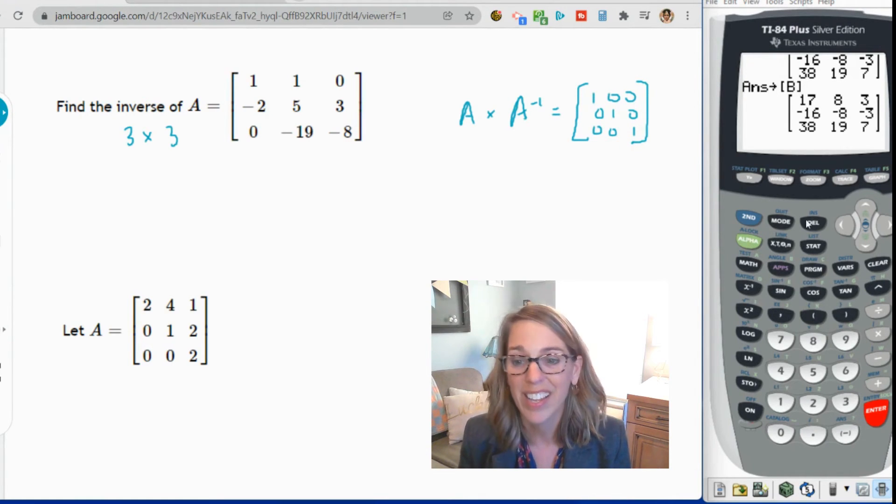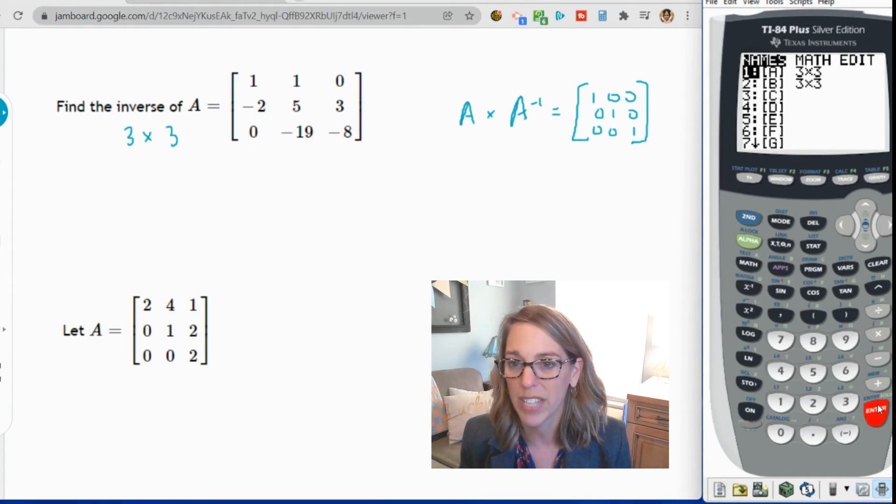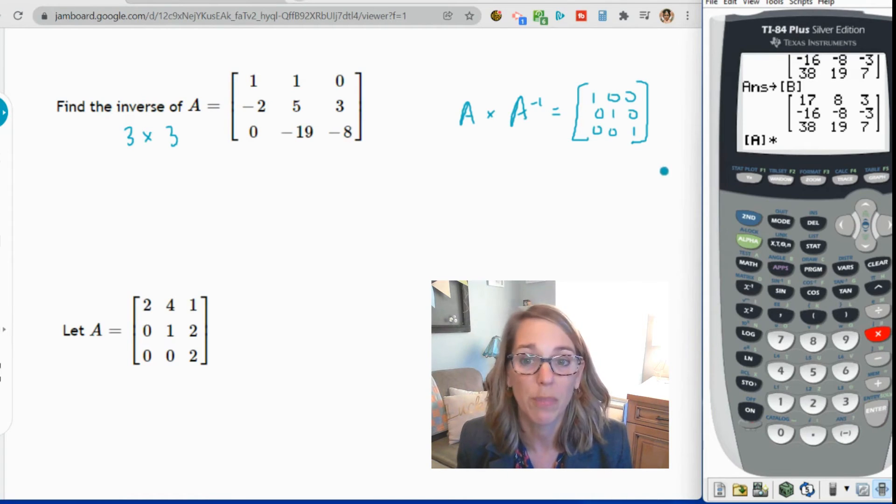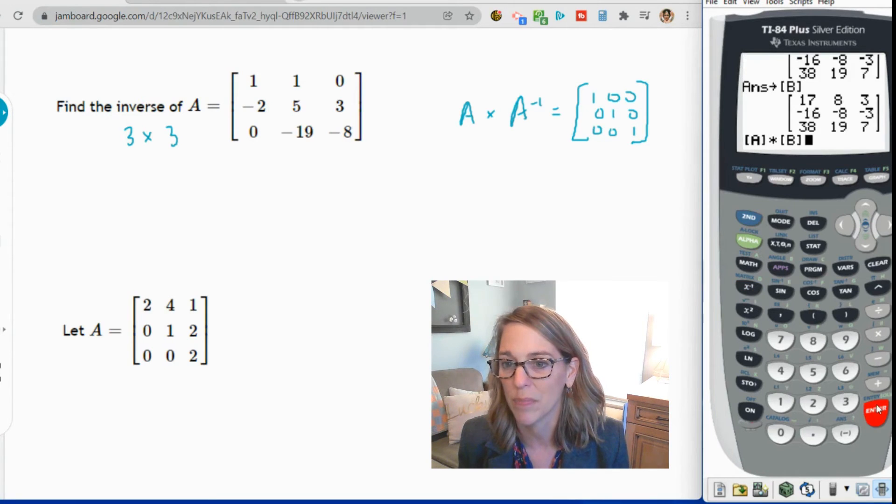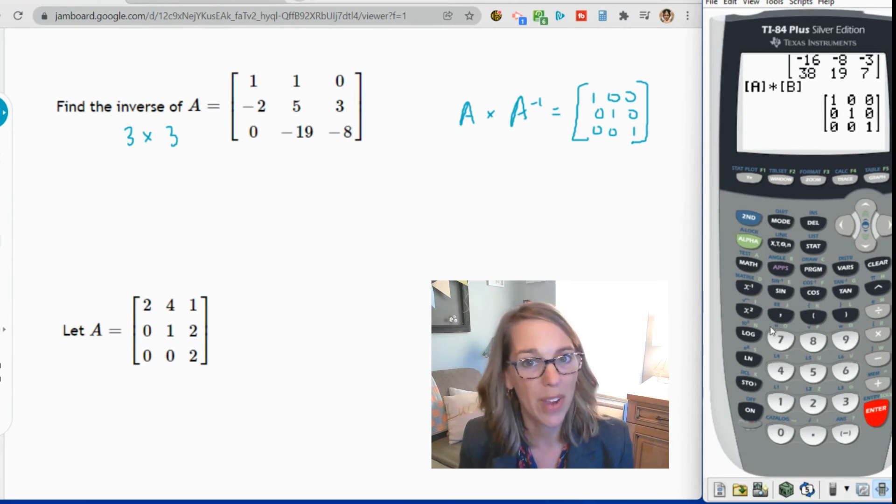Let's go ahead and multiply these two matrices together. I'm here in the home screen. I'm going to grab my matrix name. So I want to do matrix A times matrix B, which is the inverse. So second, matrix, and then I'm going to grab matrix B, enter. Okay, and there we are. So we went ahead and verified that this is, in fact, the identity matrix.